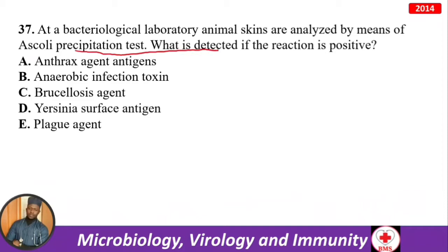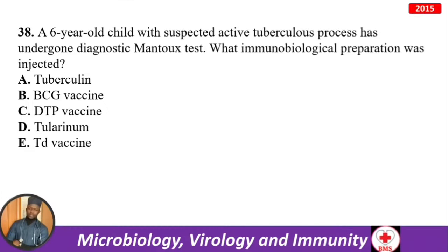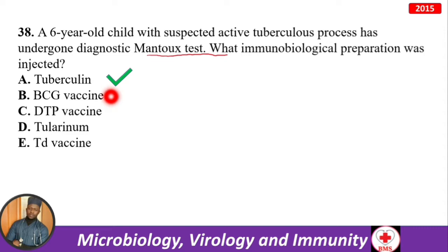A six-year-old child with suspected active tuberculosis undergoes a diagnostic Mantoux test. What immunobiological preparation was injected? It is tuberculin — used for diagnostics. BCG is the vaccine used for protection. Don't confuse tuberculin (diagnostics) with BCG (protection).